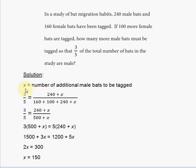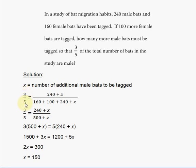The first thing you should do is think of a variable and assign it. In this case, we assign X as the number of additional male bats to be tagged — the number of males you're going to add to the current number.